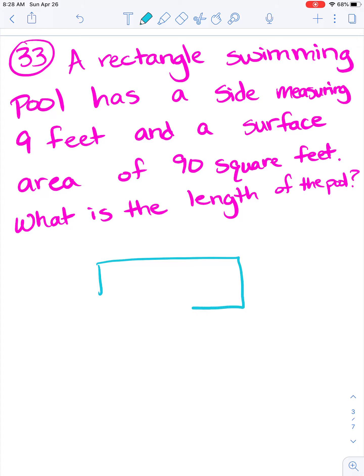A rectangular swimming pool. So I'm going to go ahead and draw a rectangle. I always love to draw pictures. It helps with math a lot. Has a side of 9 feet. But the surface area equals 90 square feet. So we could do the feet squared or we could say squared feet either way.